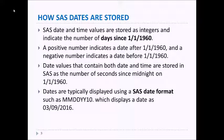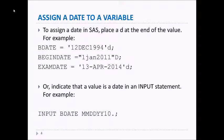To assign a date, you can place a 'd' at the end of a date value. For instance, here are three examples: BDATE, BEGINDATE, and EXAMDATE. Notice the 'd' that appears after the date, which is in quotes. Or you can use an INPUT statement to read a date—you just have to assign a format, and this is one example of how to do that.